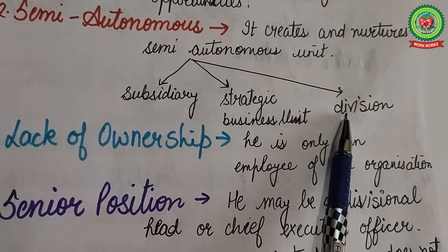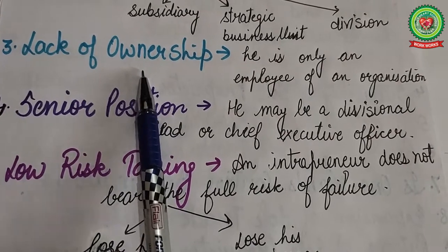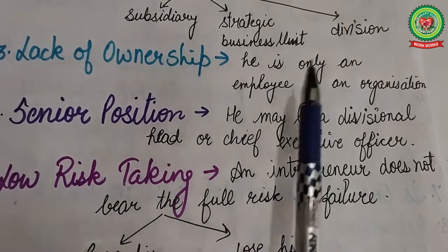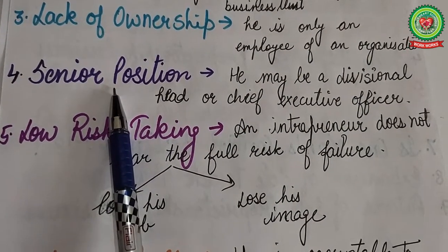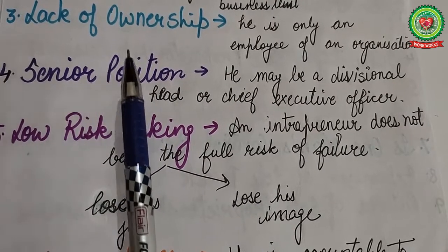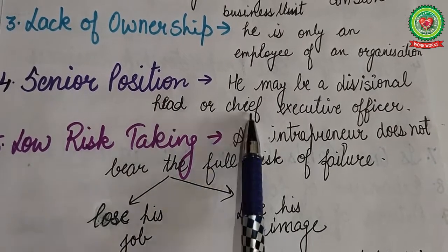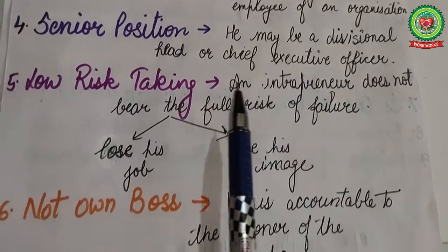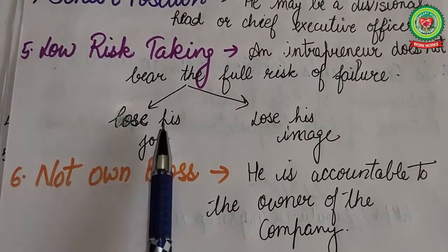Third characteristic is lack of ownership — the intrapreneur is not the owner of the unit; they are an employee of the organization. Fourth is senior position — an intrapreneur occupies a senior managerial position in the company. They may be a divisional head or a chief executive officer of that organization.